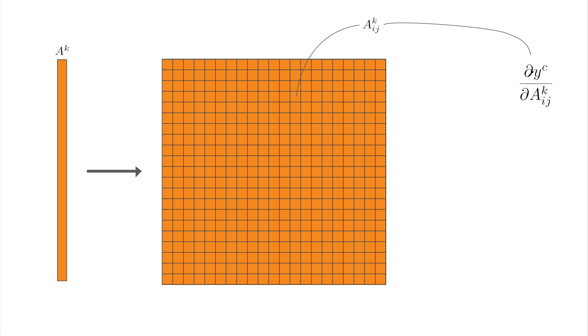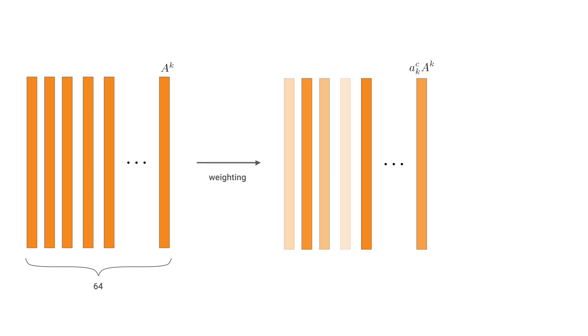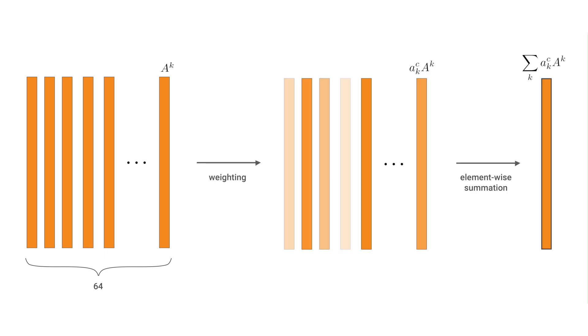Specifically, we sum the gradients of every element in the feature map and divide by the total number of elements. This gives us the weight for the given feature map. This process is similar to global average pooling, except we are summing derivatives rather than the actual element values. We follow the same procedure for every feature map in the convolutional layer, then multiply each feature map by its weight and do element-wise summation.